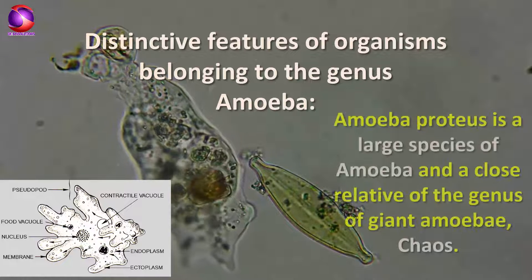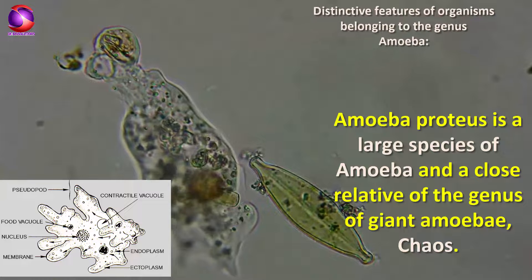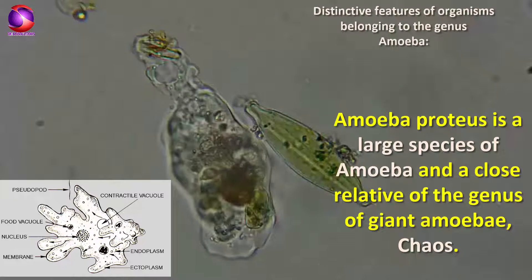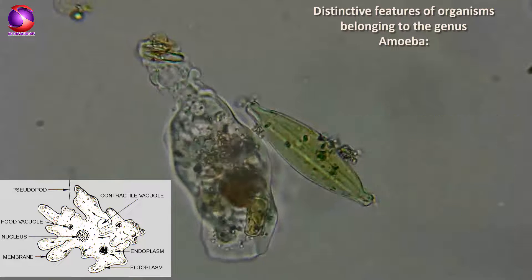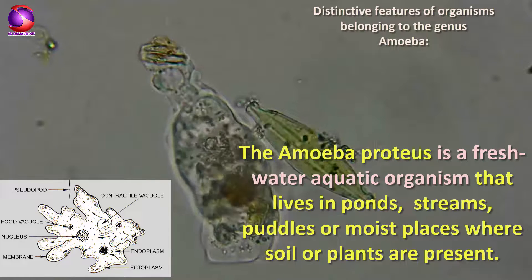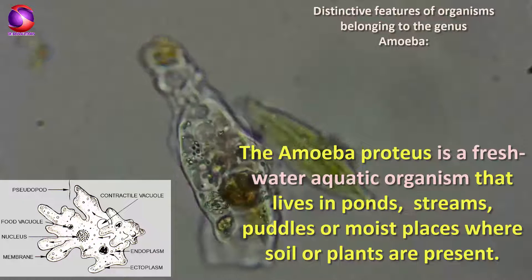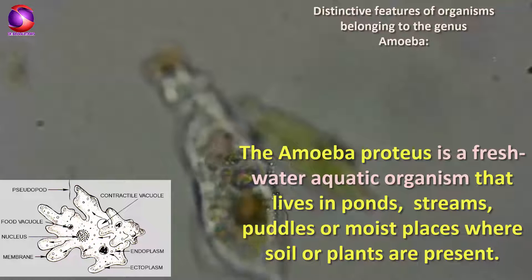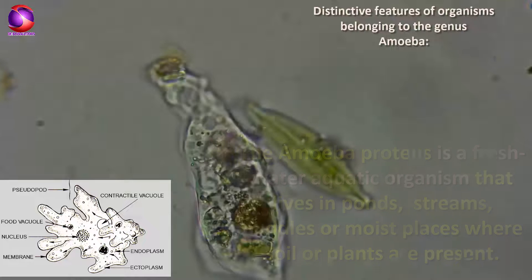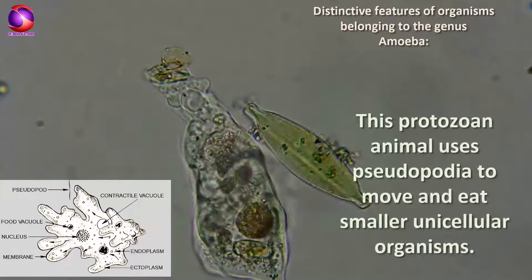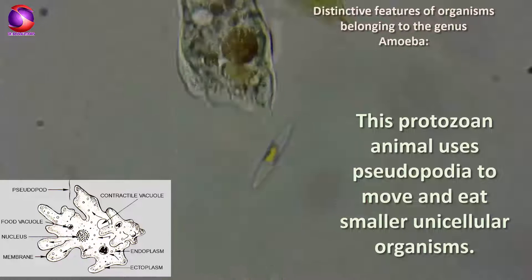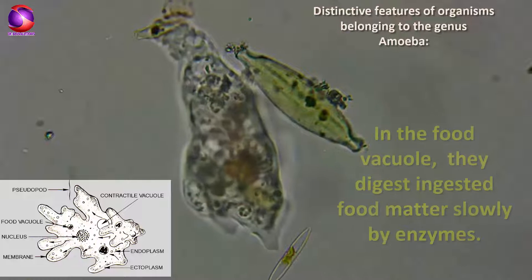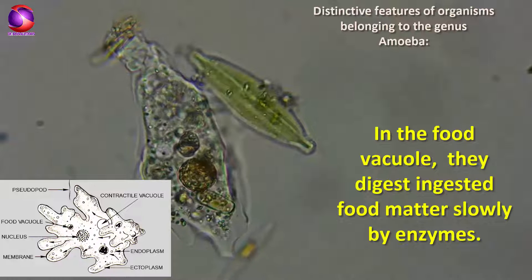Now we will see the distinctive features of Amoeba proteus. Amoeba proteus is a large species of amoeba and a close relative of the genus of giant amoeba Chaos. It is a freshwater aquatic organism that lives in ponds, streams, puddles, or moist places where soil or plants are present. This protozoan animal uses pseudopodia to move and eat smaller unicellular organisms in the food vacuole.